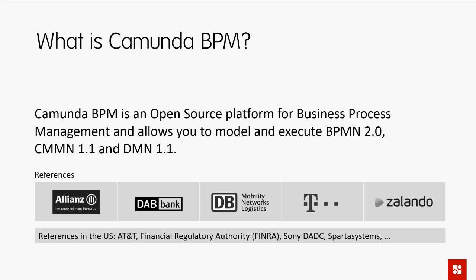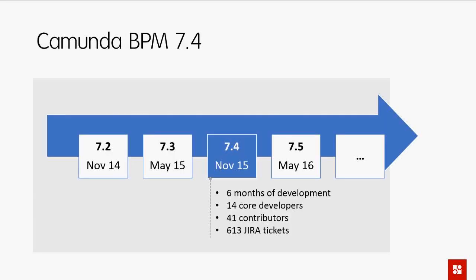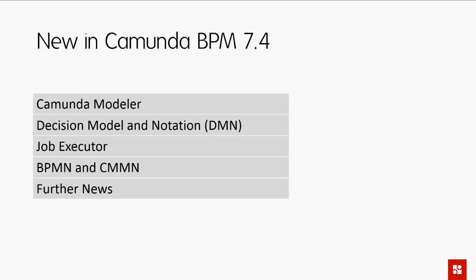Looking at release 7.4 — we release in six-month cycles, so the last release was in May. We now have about 14 core developers working directly on Camunda BPM and more than 40 contributors. In Jira alone, we closed more than 600 tickets in the last six months, covering feature requests, requirements, and a few bugs — and this doesn't even include all the tickets closed by Nico's team at bpmn.io.